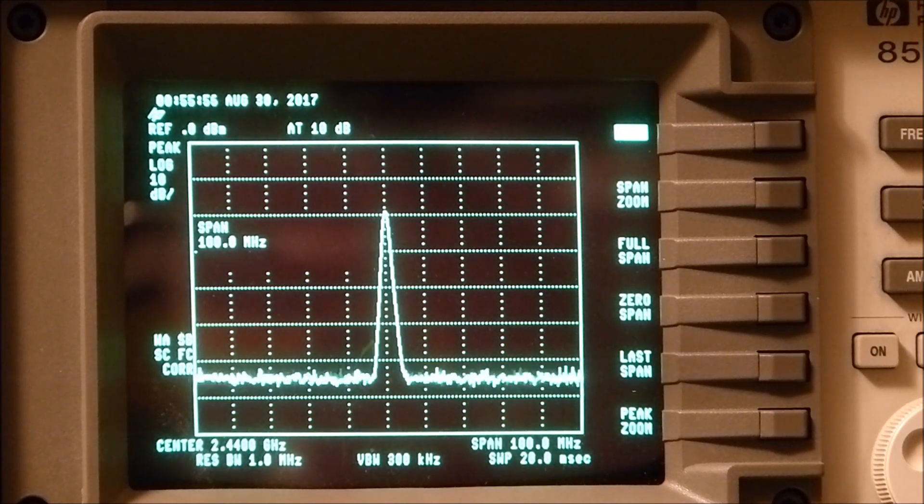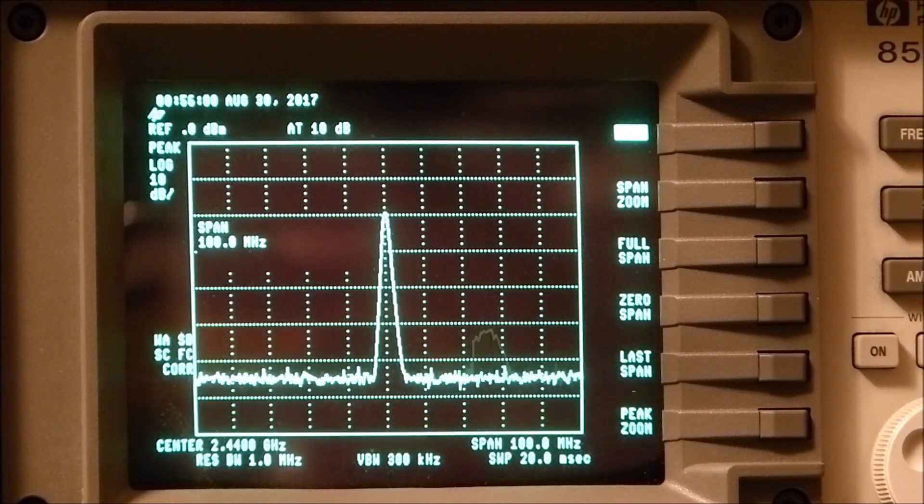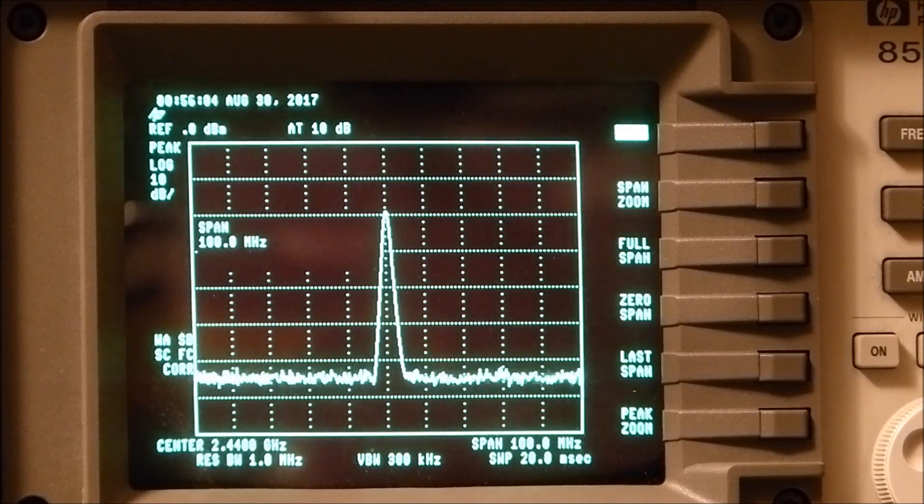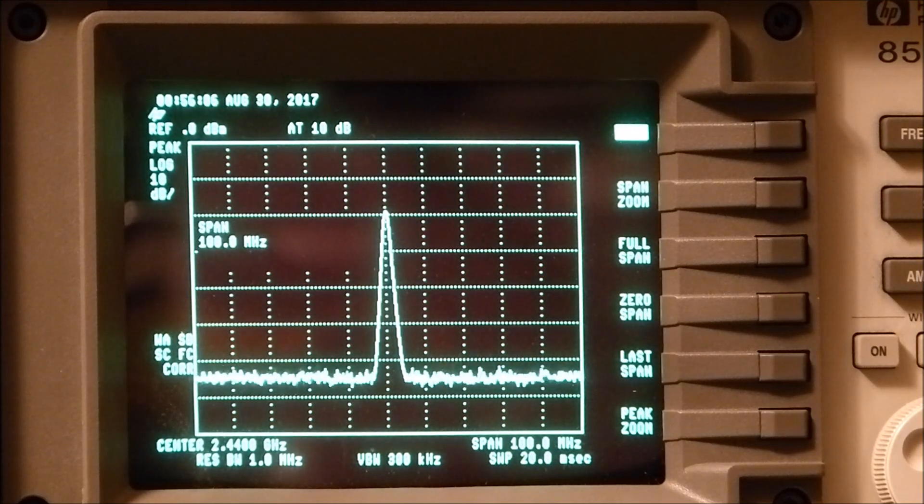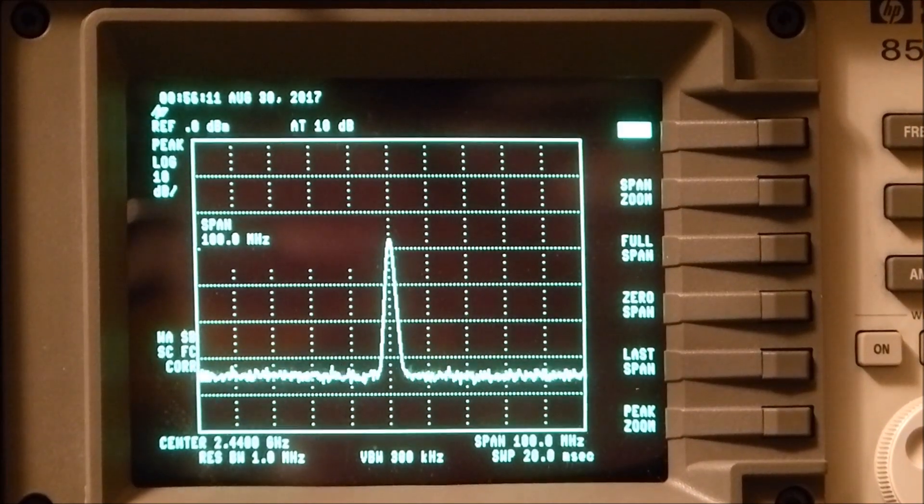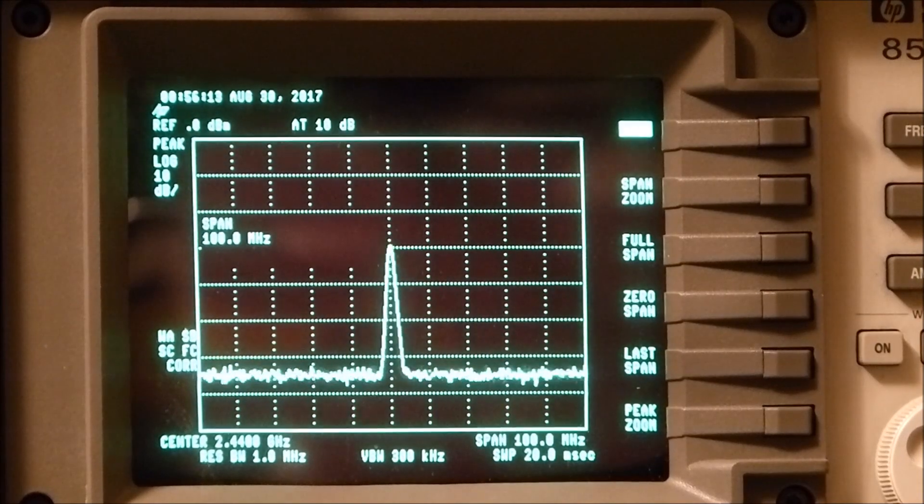That looks like the peak right there. Maybe another 12 dB, so we're getting between 20 and 24 dB gain out of the two antennas. That's pretty good, I think. So there you go, for what it's worth.